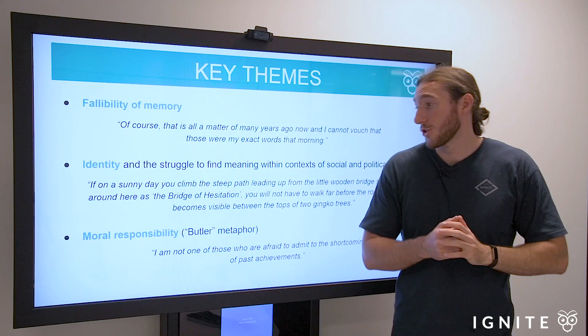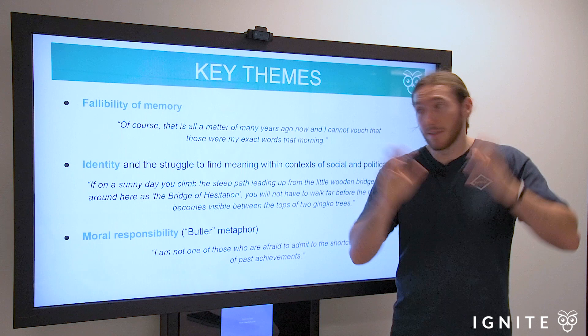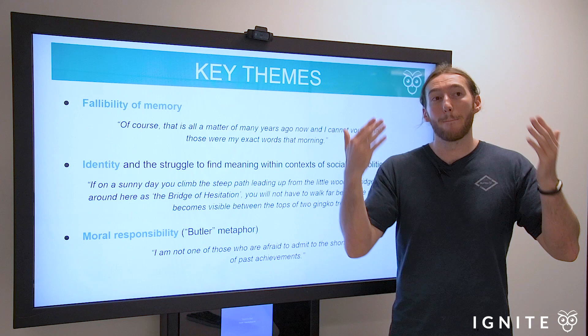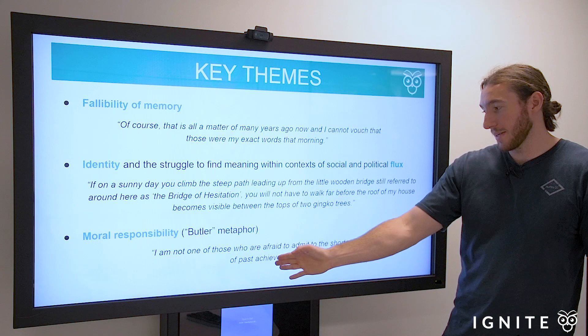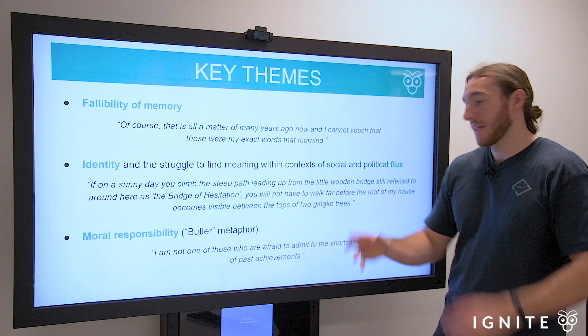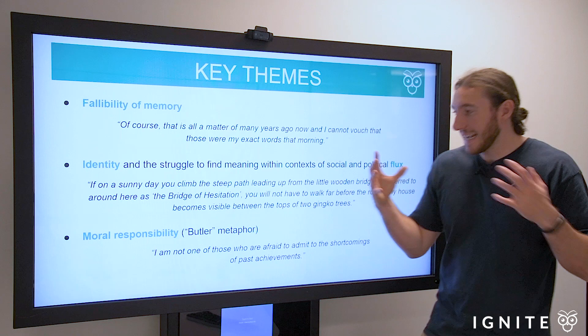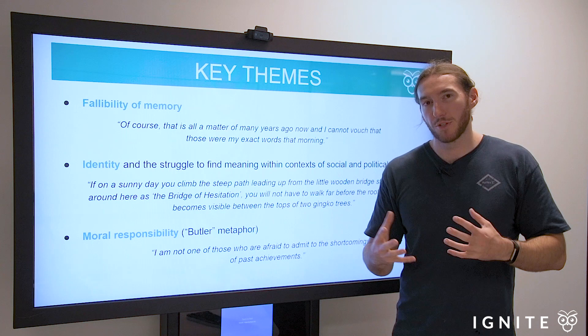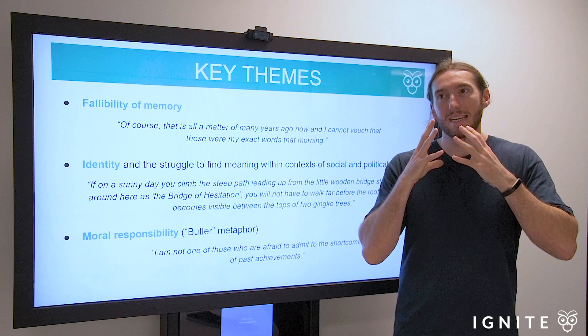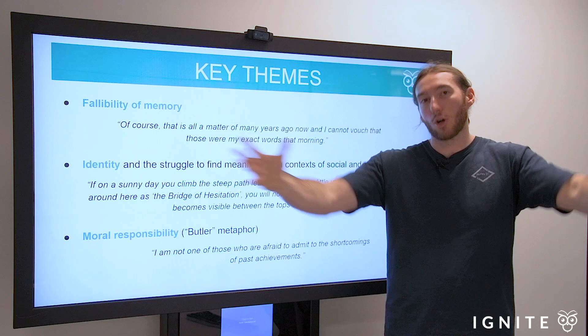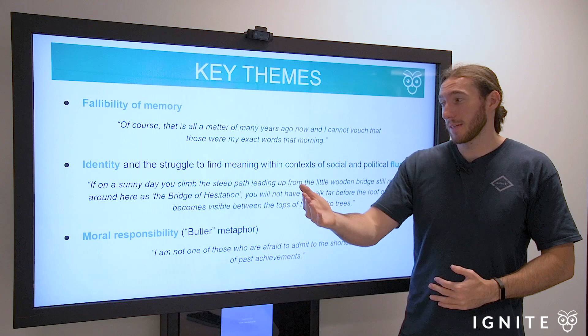We are all encouraged, as servants or butlers of a kind, to think more broadly about what our actions might result in. There's a key quote: 'I'm not one of those who are afraid to admit to the shortcomings of past achievements.' Interesting phrasing — 'past achievements' — he viewed it as an achievement, but also admits it was a shortcoming. By the end of the narrative, he is coming to an acceptance of moral responsibility for those past atrocities, and accepts that he had a limited perspective and that what he did was wrong. He didn't see the greater consequences of his acts, which were devastating ones. He struggles to assume responsibility, but arguably by the end he really does make a good effort towards that.